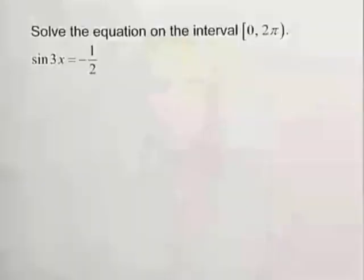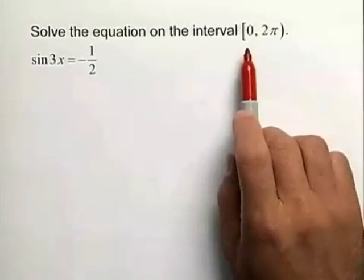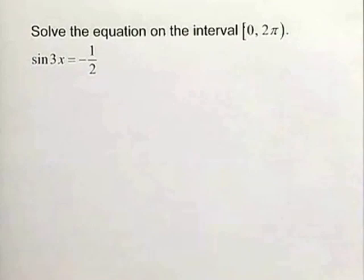Let's solve the following trigonometric equation. We're given the sine of 3x is equal to negative 1 half. We want to find the x values in the interval from 0 to 2 pi that make the left-hand side equal to negative 1 half.